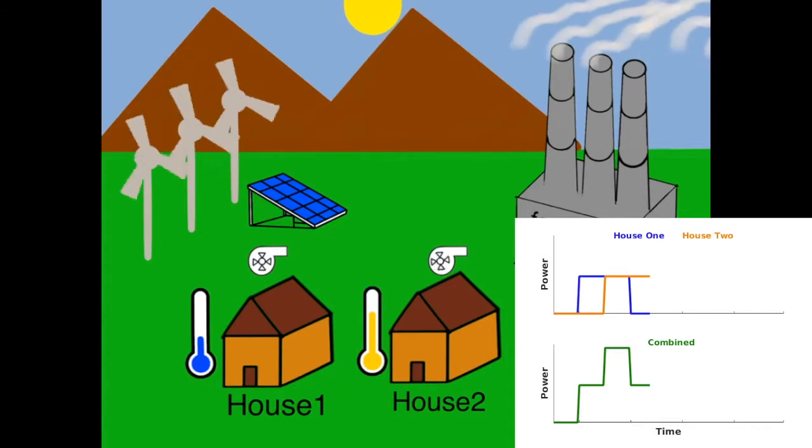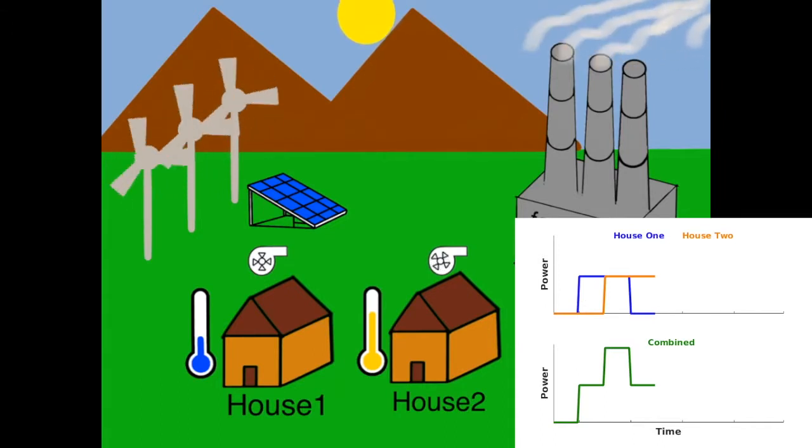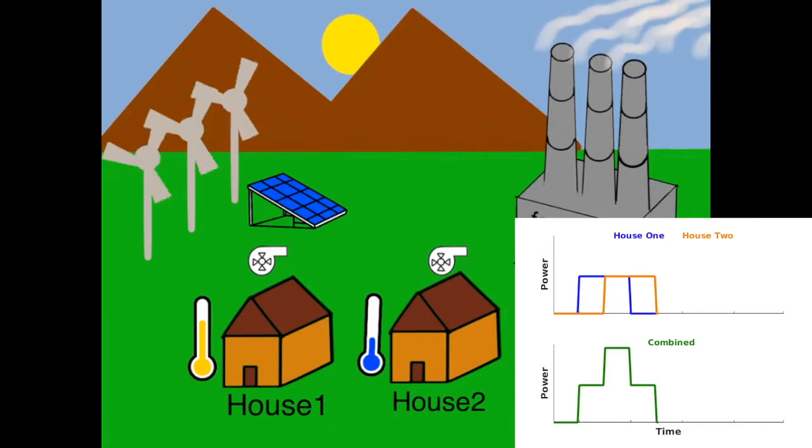Let us look at an example of a virtual battery. Observe the graph in the right bottom corner. Say the air conditioner in house one follows the on-off cycle as shown in blue and that in house two follows the on-off cycle shown in orange.